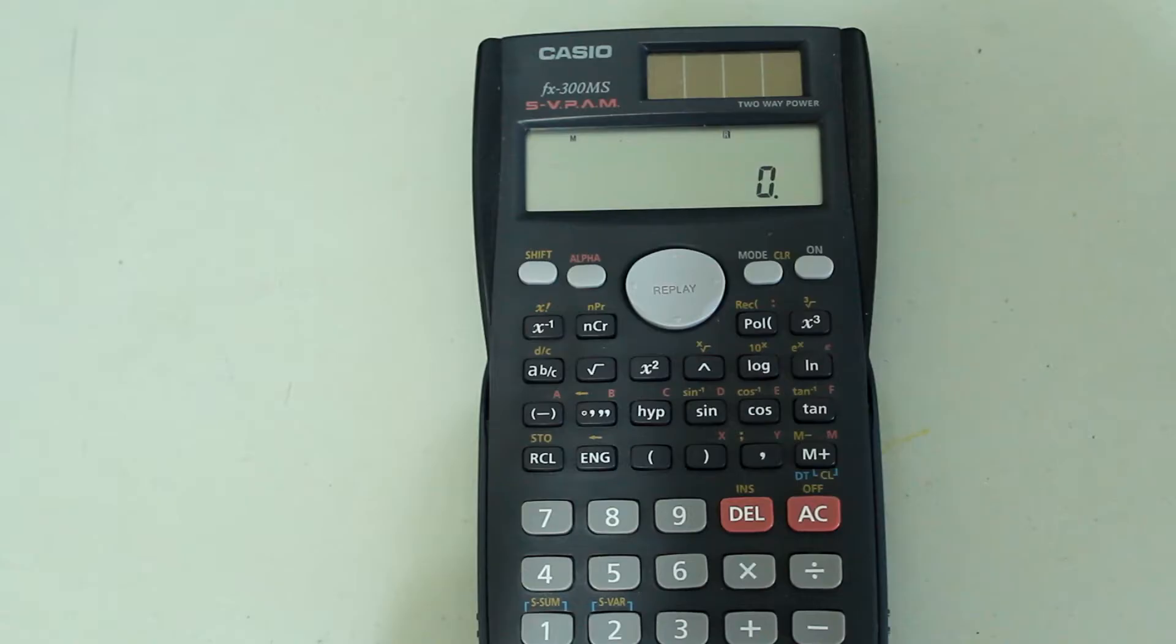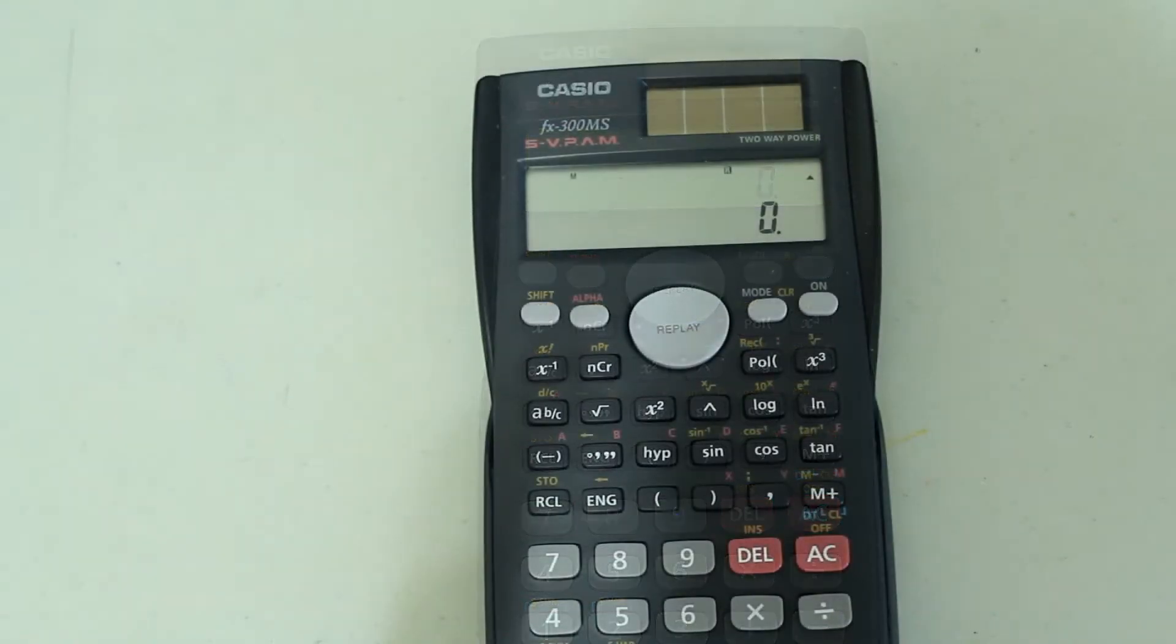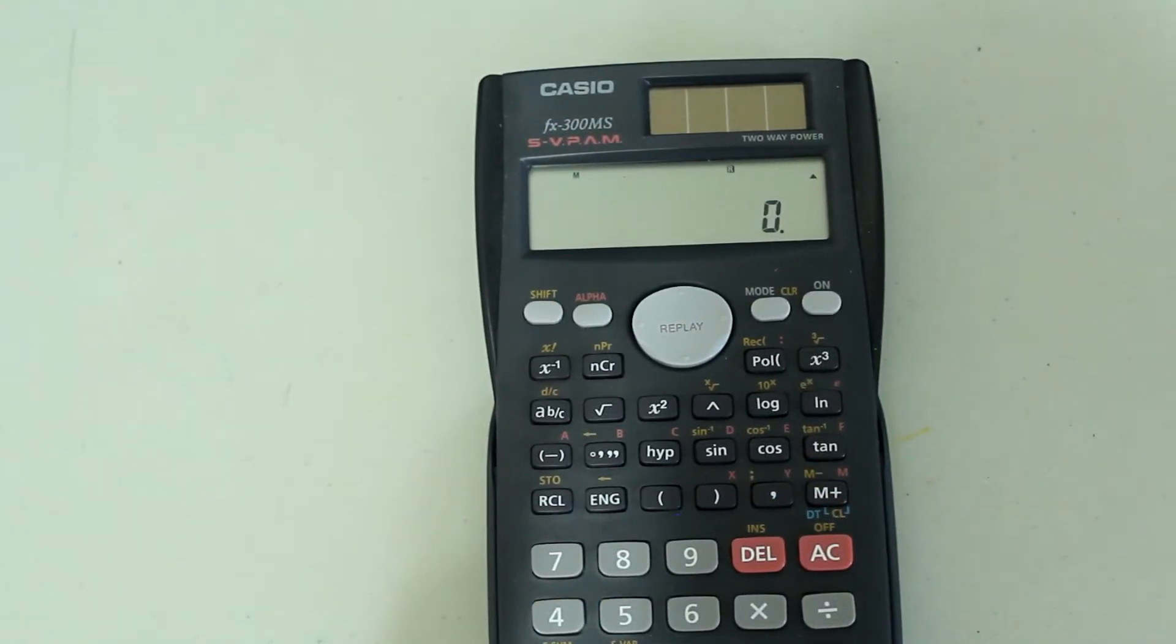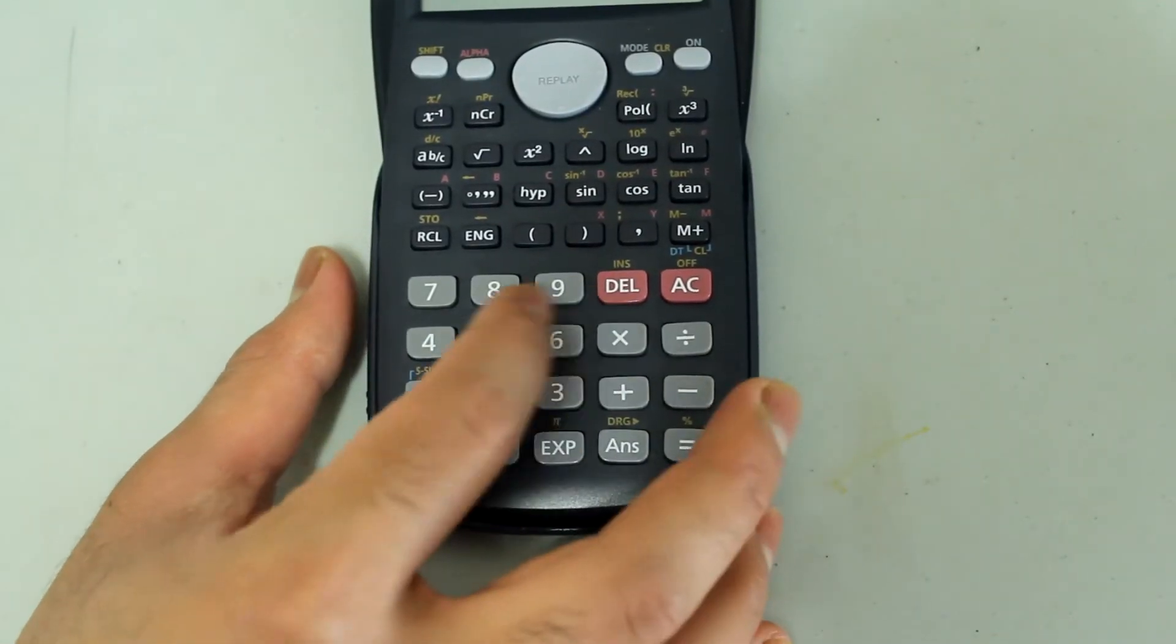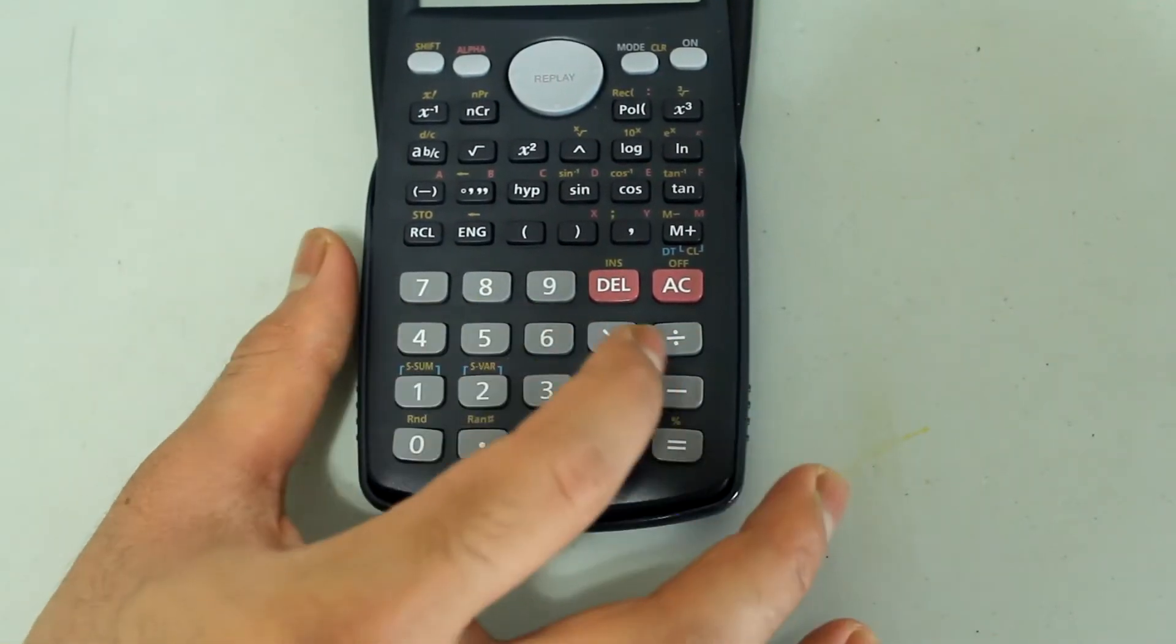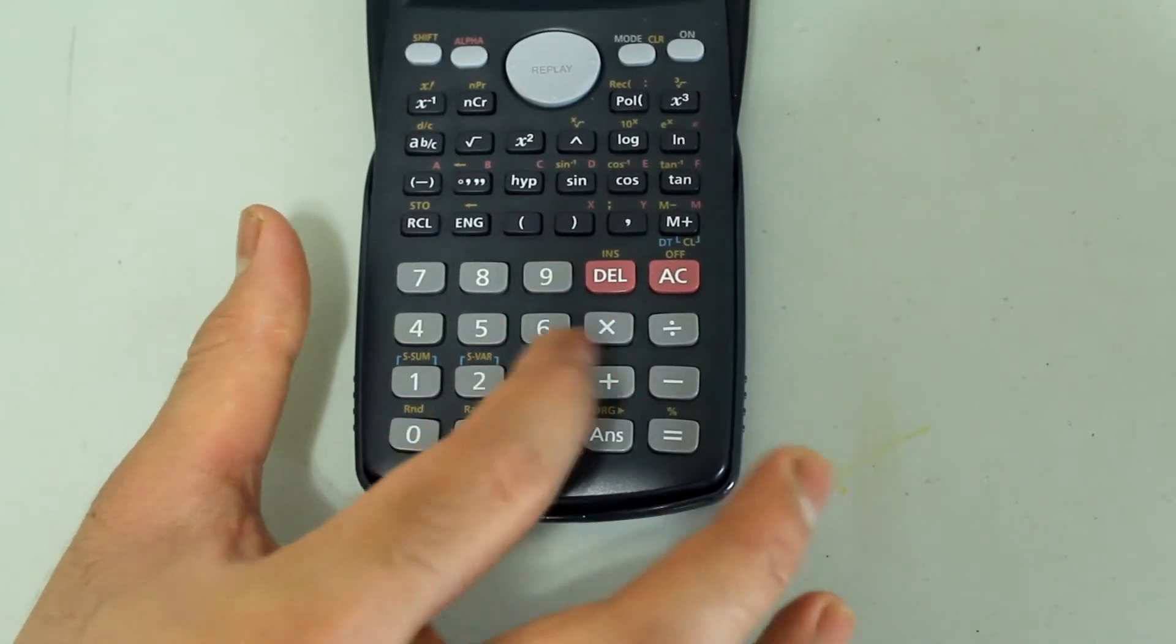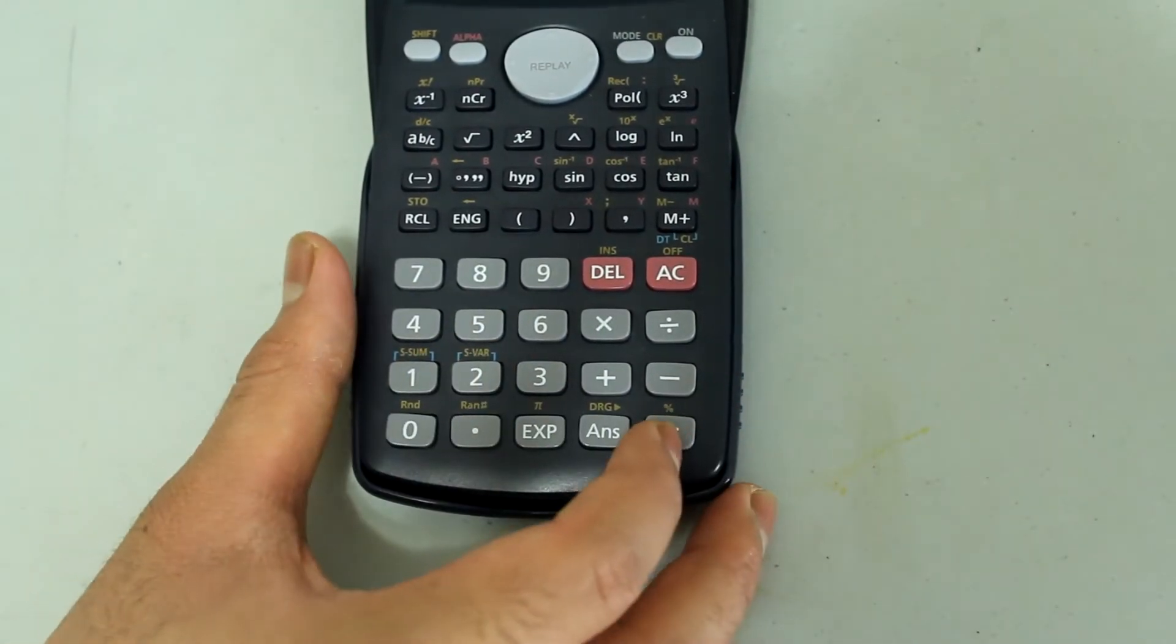Without further ado, let's get to it. Let's say that you want to calculate 6 factorial. Well, you could try to do it manually and type in 6x5x4x3x2x1 and press equals.